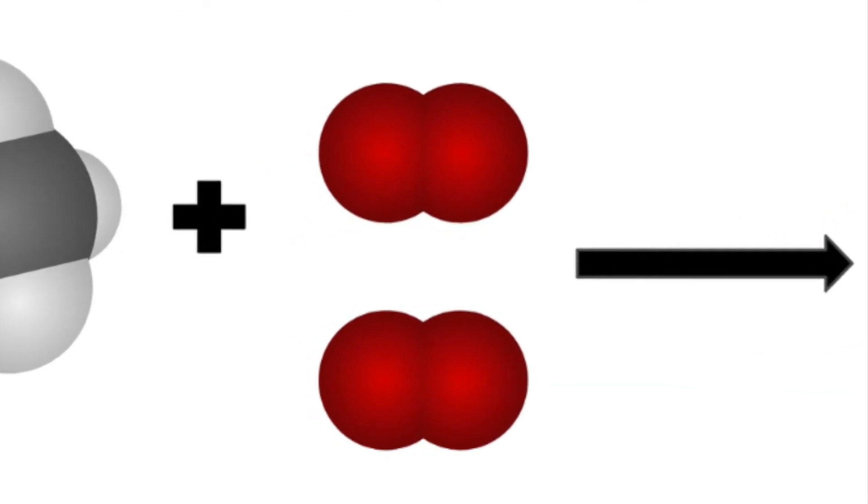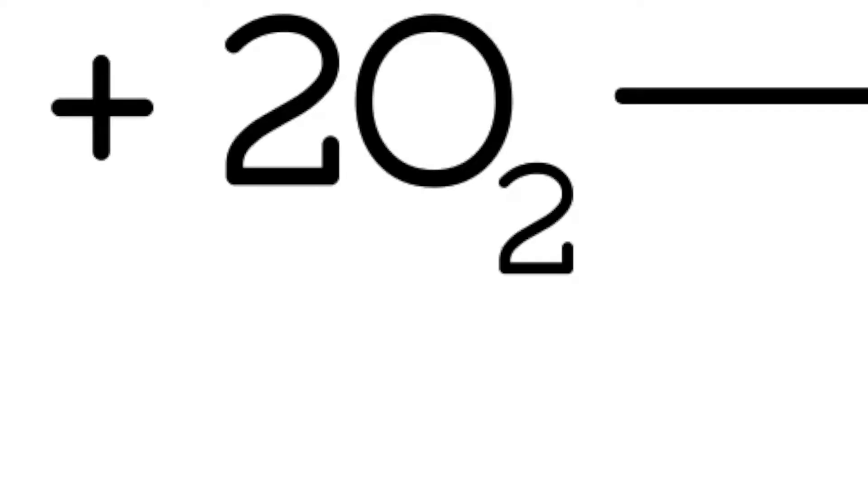So the way it works is when you have a subscript and a coefficient, you multiply them together. And that's going to always be the case. So that's where I'm getting the 4 oxygen.